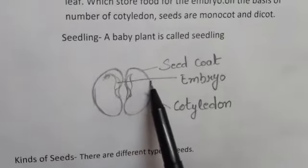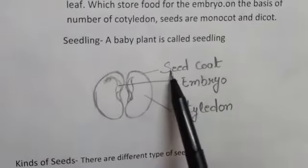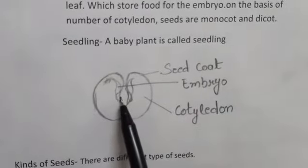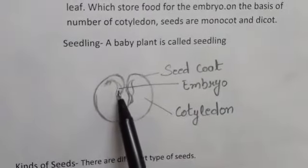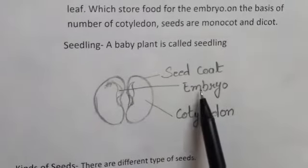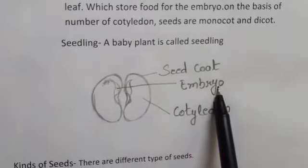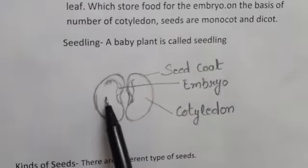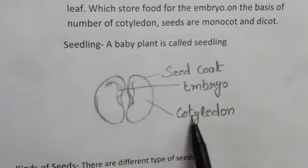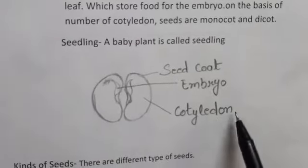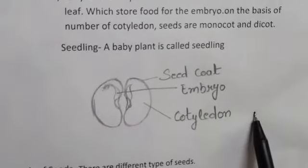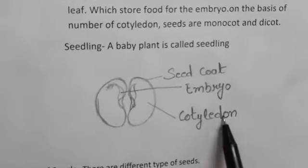This is the diagram of a seed, or you can say the structure of a seed. The outer covering of a seed is called the seed coat. Inside the seed is a small plant called the embryo. The two sides which protect the embryo are called cotyledons, or seed leaves, which store food for the embryo.